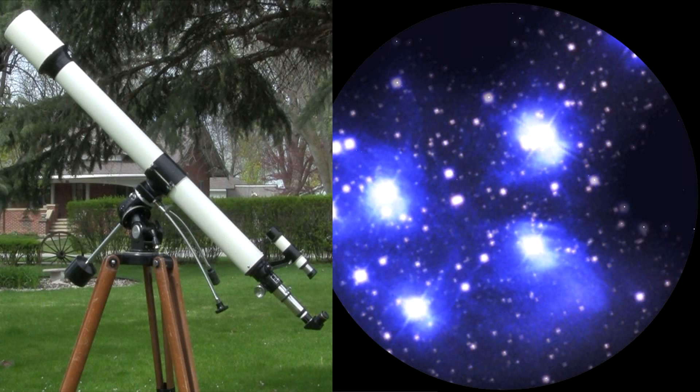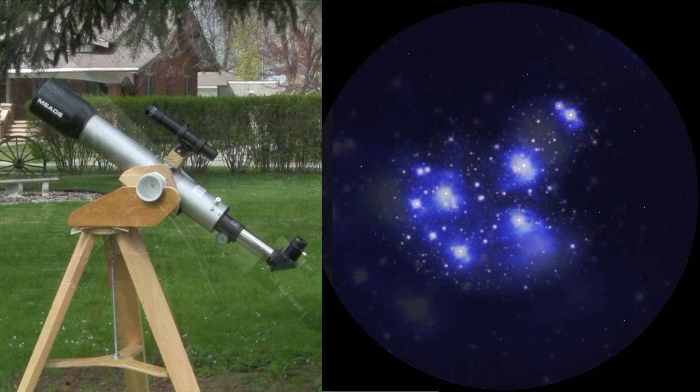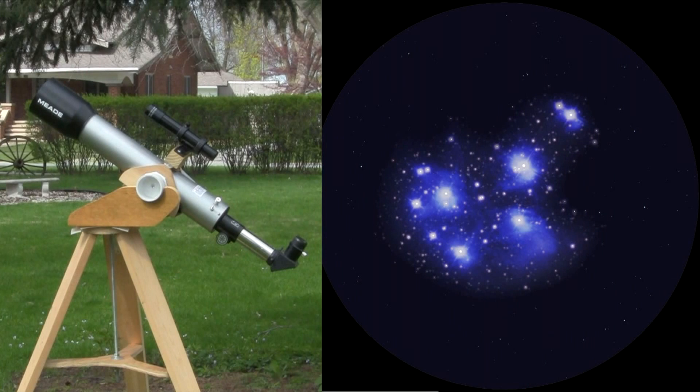So the longer F-ratio telescopes provide more magnification with the same eyepiece, but less field of view. This makes it easier to get high magnification for planets, for example, but harder to see wide field views like the Pleiades. Middle ones can still provide fairly high magnification, decent fields of view as well, and it's no wonder that many F-7 to F-10 instruments are quite popular.